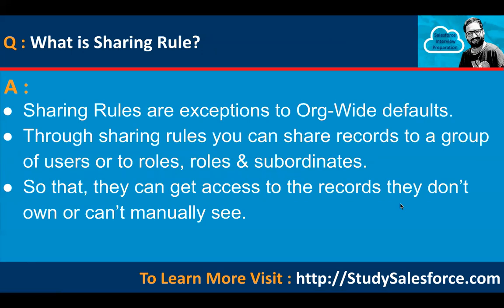What is a sharing rule? Sharing rules are exceptions to org-wide defaults. Through sharing rules, you can share records with a group of users, roles, or roles and subordinates, so they can access records they don't own or can't normally see. Role hierarchy opens up record sharing vertically — records are shared only with those you report to. But if you want to share records based on certain conditions with users you don't report to, you can do that with a sharing rule. Detailed videos are available on studysalesforce.com.